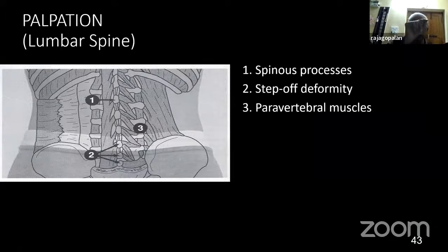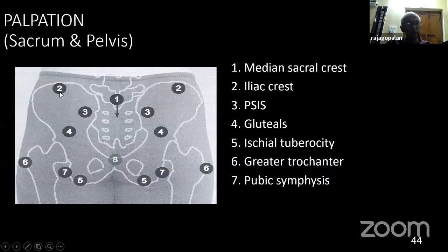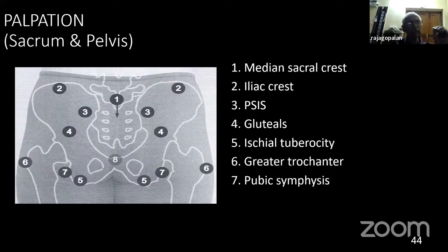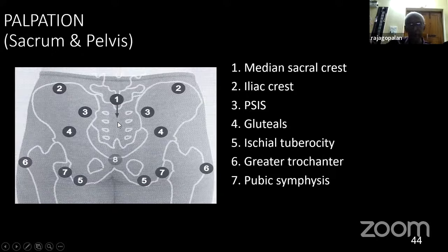You have to palpate the spinous processes and go along with them. You have to know which spinous process you are at. Regarding the anatomy: a line joining the two iliac crests is between L4 and L5. So you don't have to go from C7 counting every vertebra — you lose time in the exam. Follow the top of the iliac crest and keep a scale or tape there; the vertebral spinous process is just below. The posterior superior iliac spine corresponds to S2. So when you want S1, the spinous process just above the PSIS corresponds to S1. The PSIS is also important for the Schober's test.